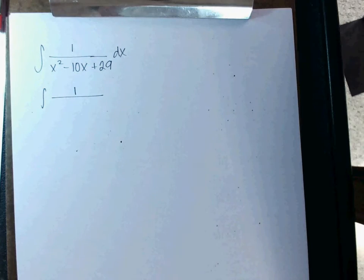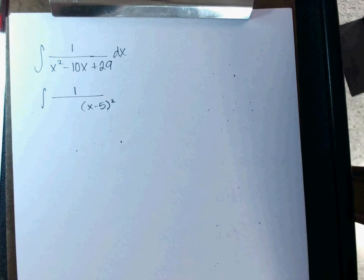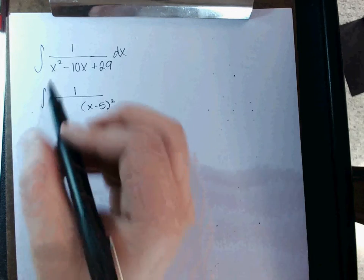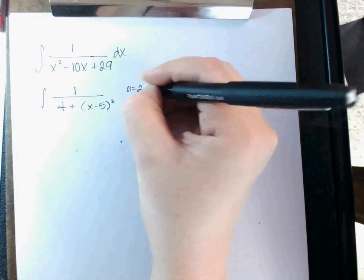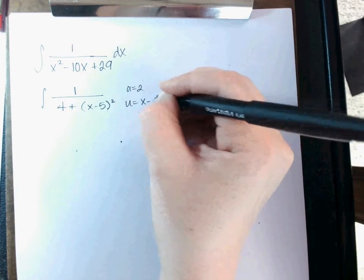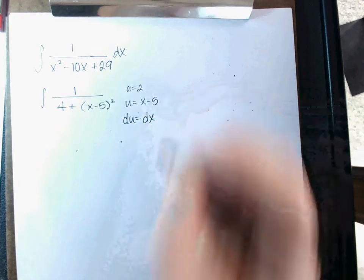x minus 5. Now notice, I know I'm going to have to switch it around later, so I'm just going to switch it around now. So I'm going to put x minus 5 here. And what is 5 squared? 25. So I need to borrow 25 from the 29. How many are left over? 4 plus. Now it's already in the form that I want it to be. What's my A going to be? 2. What's my U going to be? x minus 5.